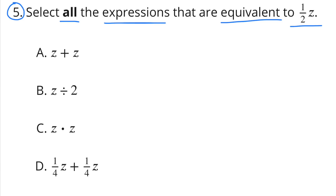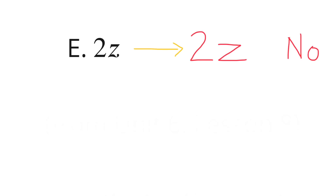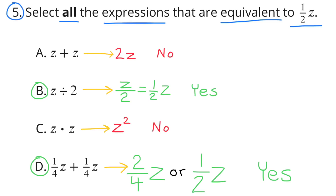Number 5: Select all expressions equivalent to one half z, or half of z. A — z plus z — equals 2z, so no. B — z divided by 2 — is equivalent to half of z, so yes. C — z times z — is z squared, so no. D — one fourth z plus one fourth z — equals two fourths z, or one half z, so yes. E — 2z — is not equivalent to half of z. The expressions equivalent to one half z are B and D.